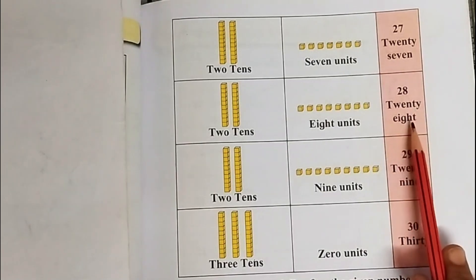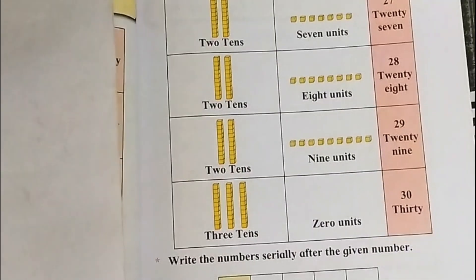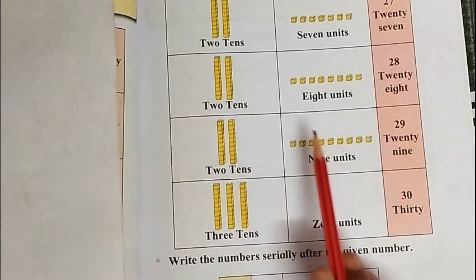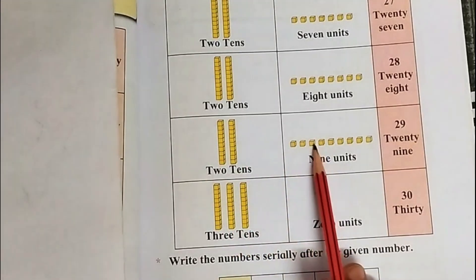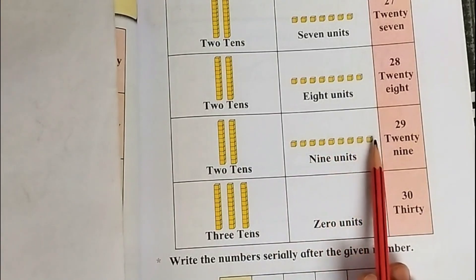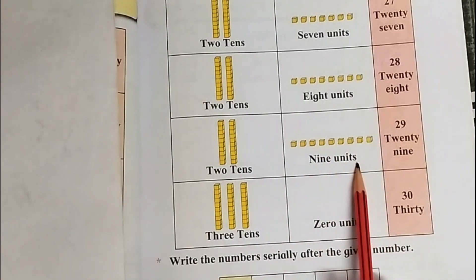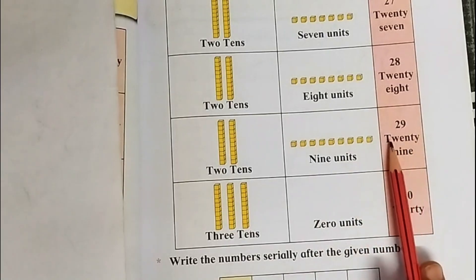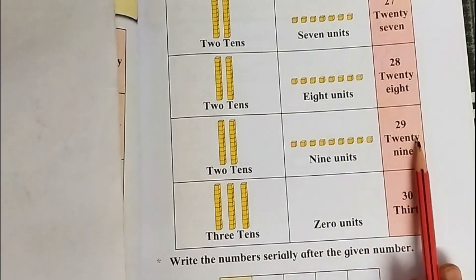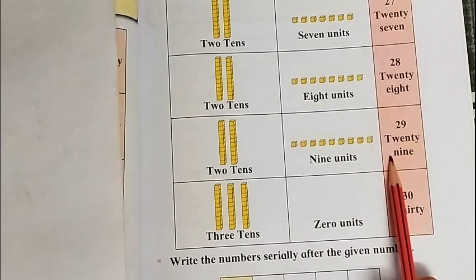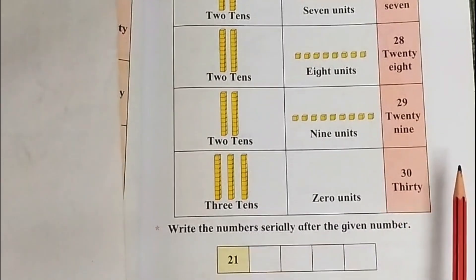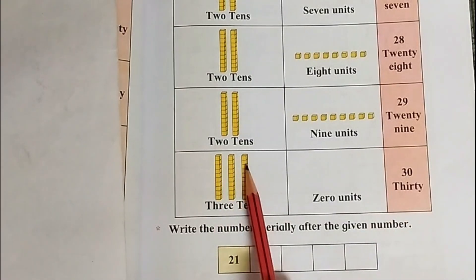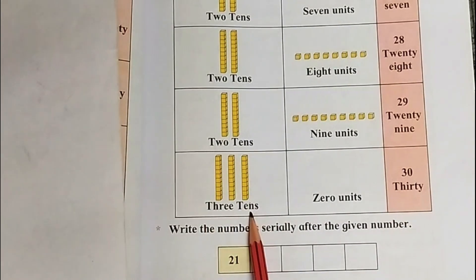1 ten, 2 tens, and 9 units: 29. In figure: 29. In words: T-W-E-N-T-Y (20) N-I-N-E: 29.